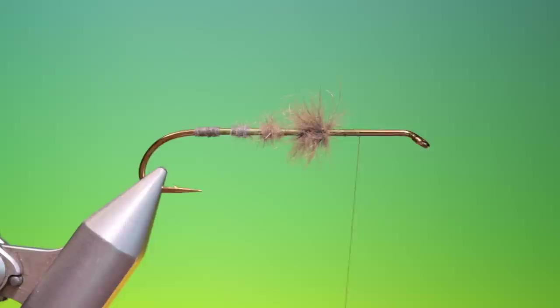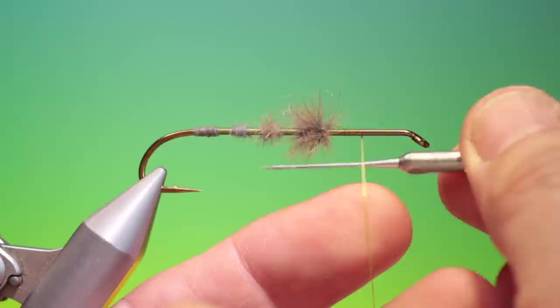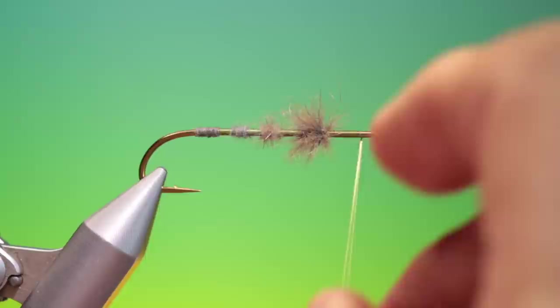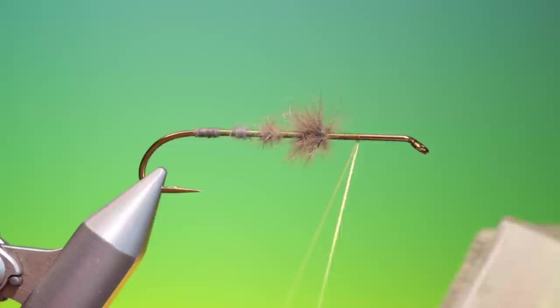So we want to split our tying thread again. There we are. And if you're using heavier materials what you want to do is make a dubbing loop by doubling your thread. But with light materials it's okay to split it. So I now have a full clip with guard hairs and under fur. This is your fur hackle.